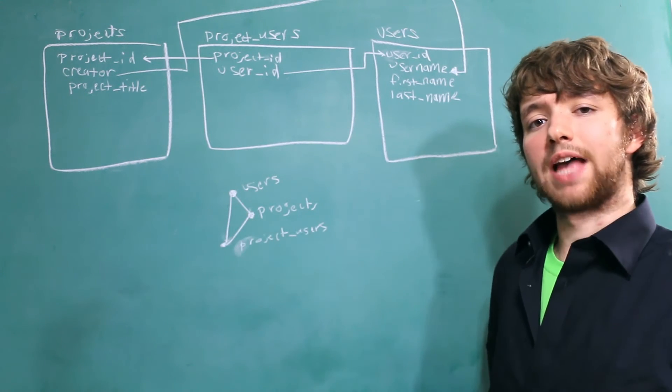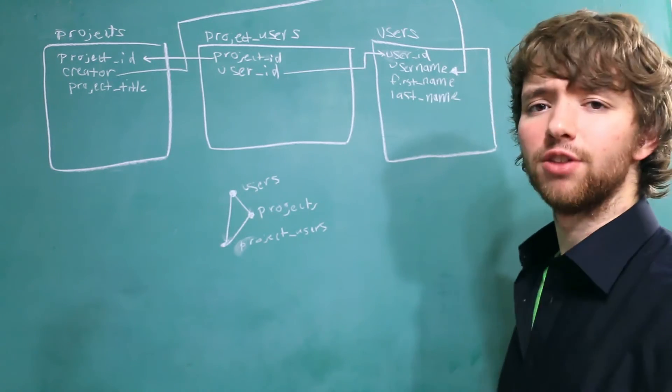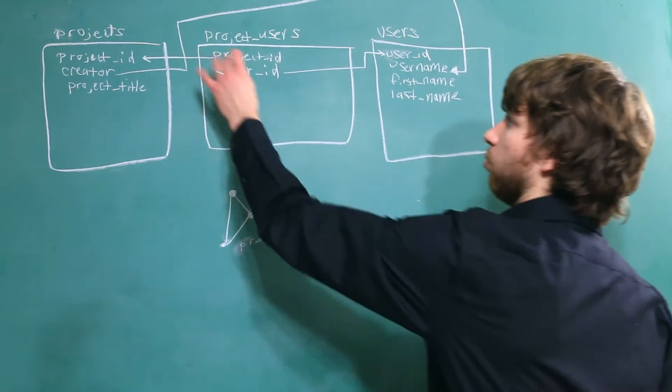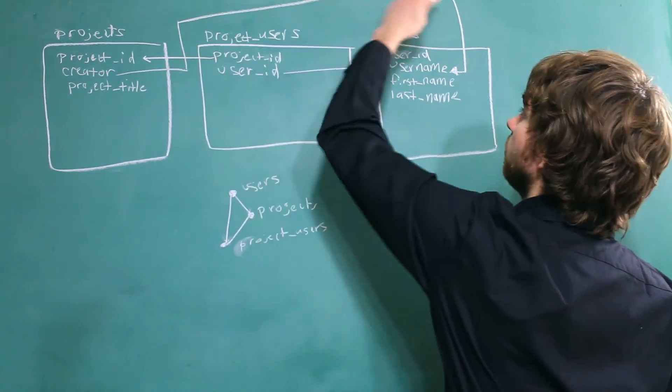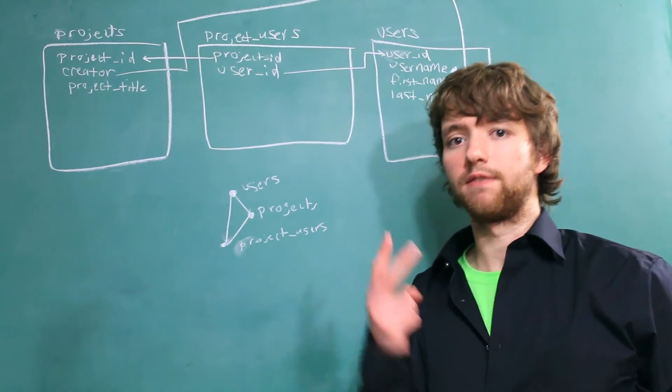The next thing we want to do is ask the important questions about the foreign keys. Let's look at all the foreign keys we have here. We have one, two, three. So we need to ask at least two questions for each one of these.